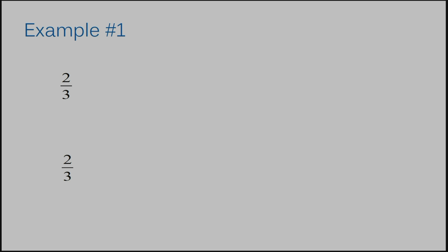Example number one. Let's start with two-thirds. Two-thirds could be written in so many ways — an infinite number of ways, actually; we could go on forever writing down fractions that are equivalent to two-thirds. I could multiply both my numerator and my denominator by four and get an equivalent fraction to two-thirds. Let's try that. Two times four is eight. Three times four is twelve.